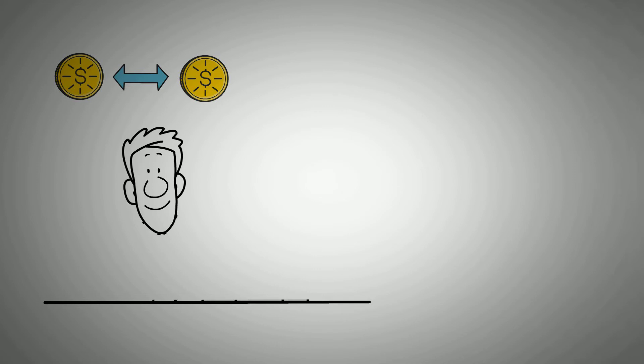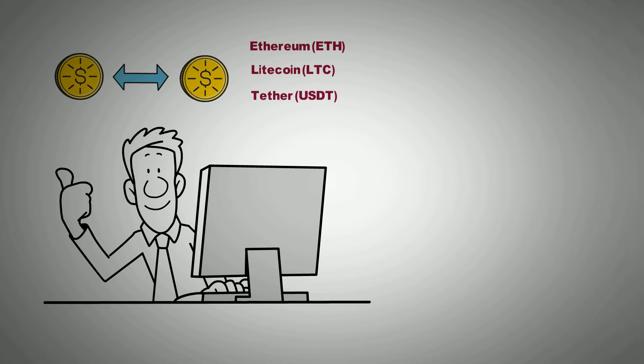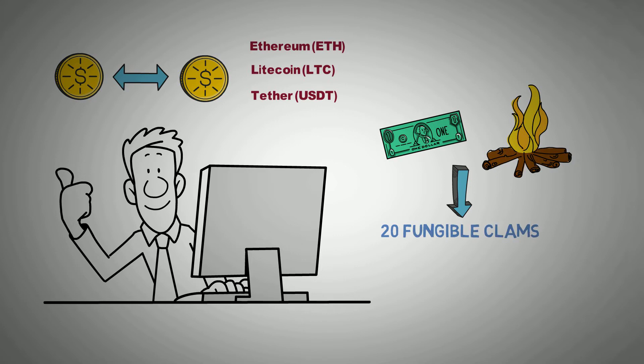Fungible tokens are cryptocurrencies that can be easily interchanged, which means during exchange or trading, they remain as exact as they were before trading. They are separable assets that aren't one of a kind and can be easily traded for another asset of the same type. Each fraction of a token is equal to the next. Some examples of fungible crypto are Ethereum (ETH), Litecoin (LTC), Tether (USDT), and many more — one ETH for another ETH. So if a fungible clam is worth a dollar and 10 logs of wood are worth $2 each, the family would have to swap 20 fungible clams to buy the 10 logs.